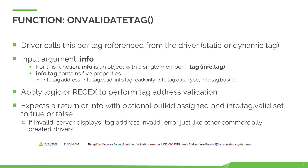OnValidateTag validates tag addresses and data types. Apply regular expressions or regex for quick or sophisticated syntax checking. The input is an object, info, with a single member, info.tag. The developer assigns values to info.tag and returns the info object. Info has five properties: address, valid, read-only, data type, and bulk ID. Tags that share the same bulk ID are blocked together and provided to the OnTagsRequest and OnData functions, allowing the script to complete all the tags in the block in a single processing transaction. Bulk ID can be used, for example, to request values for multiple tags in one device message and assign the return values to all tags in one processing transaction.